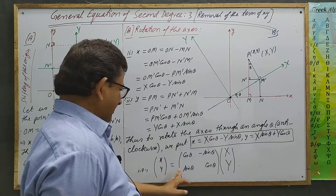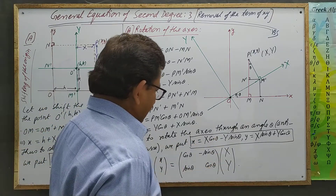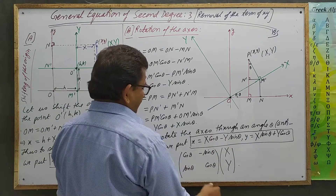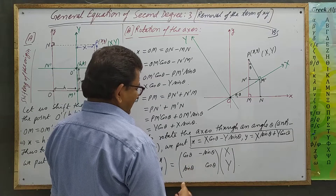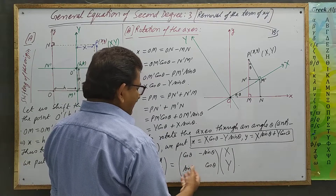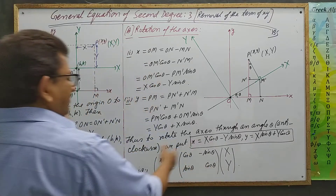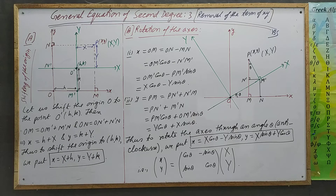This can be written in matrix form. This is easy to remember — with small x, y and capital X, Y as columns — and the rotation matrix. You will remember it because of the matrix form.